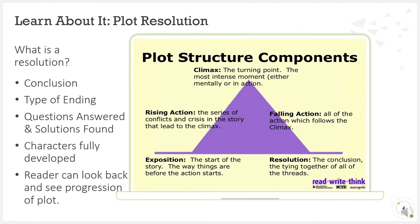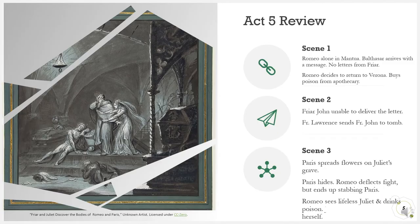Over the past several weeks, we've talked about plot structure. We are now at the resolution. A resolution is the conclusion — it's a type of ending. It's also where we hope all the questions are answered and solutions are found. Characters are fully developed by this point, and a reader can look back and see how the plot progressed as well as how the characters were developed over the course of the story. Before we can fully understand the resolution for Romeo and Juliet, we should review Act 5.